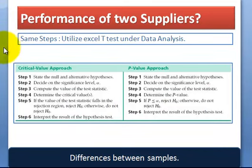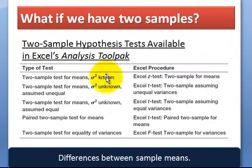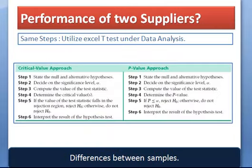In the performance of two suppliers, you just utilize the same test. Here's a t-test under data analysis. It might be a z-test. It might depend upon what information you have. You basically just do the same six steps to draw your conclusions.